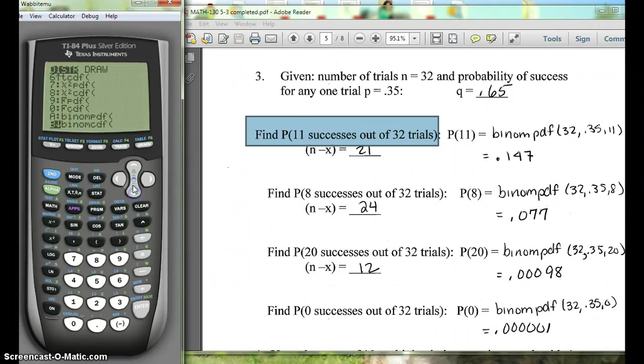Oops, not zero. On this one I guess it's A. It might be a different number on yours, but you'll scroll down until you see binompdf and you'll hit enter.